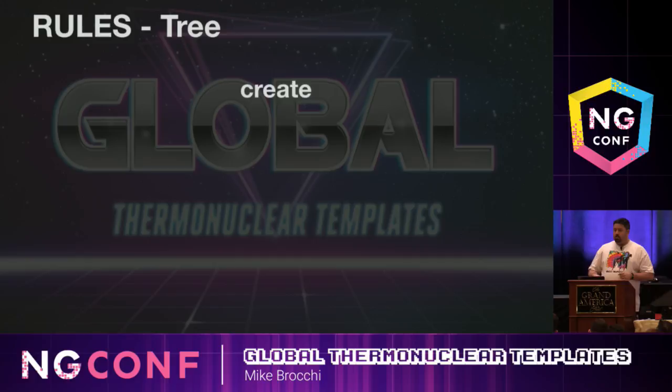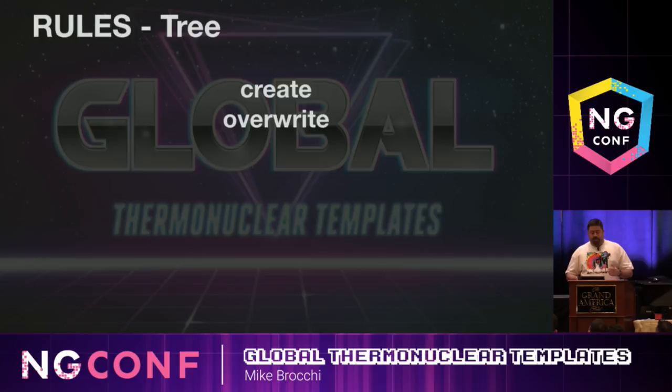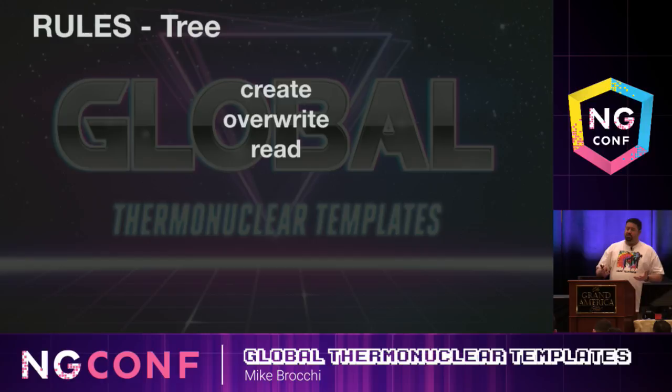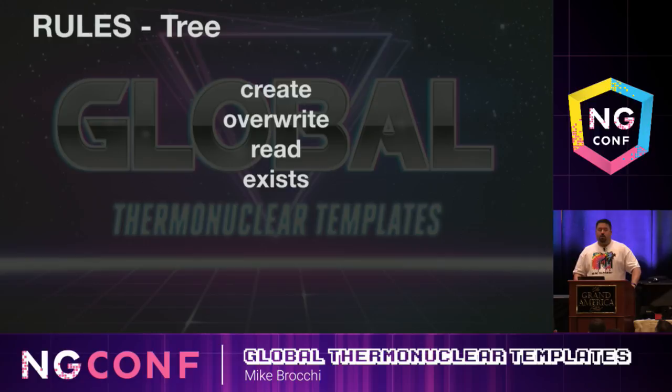A tree gives you the ability to do a bunch of different things out of the box. You can create files — you'll have an object with access to that and can create files with it. You can overwrite files — if a file's there, you can test to see if it exists and overwrite it. Reading files is helpful to read the content of an existing file, make some modifications, and then overwrite that file.